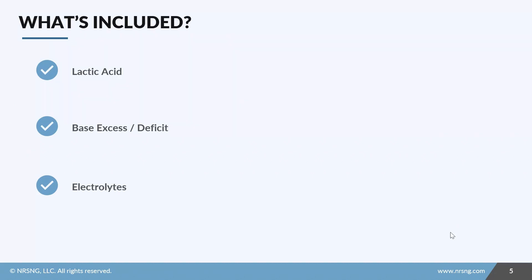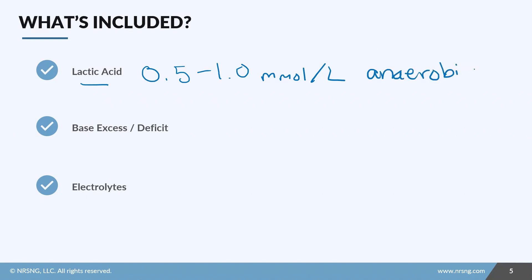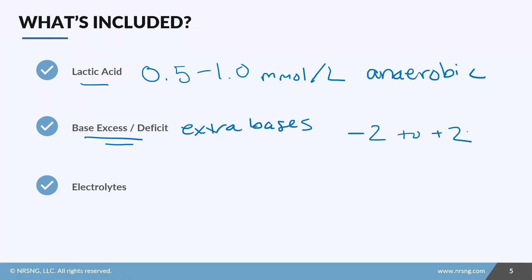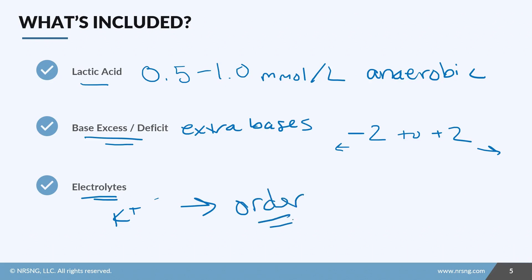There are a few other things found on an ABG besides acid-base balance and oxygenation. One is lactic acid, with a normal value of 0.5 to 1 millimoles per liter; an elevated level indicates anaerobic metabolism, possibly from sepsis or perfusion issues. Another is base excess or base deficit, which measures extra bases in the blood — normal is negative two to positive two. Finally, in many cases you can get electrolyte levels like potassium on your ABG, which can be faster than waiting for a full chemistry panel, but you usually need to specifically request it.